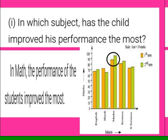Subdivision A: in which subject has the child improved his performance the most? Looking at the bar graph, in Math the difference between the heights of the two bars is greater than in any other subject. So we can conclude that in Math the student's performance improved the most.